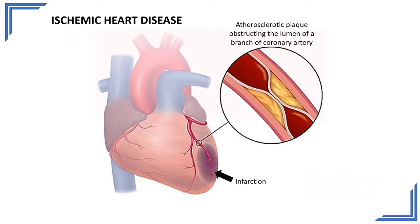The patient usually presents with a constricting kind of precordial chest pain that radiates to the medial side of the left arm. The pain can also radiate to the jaw as well as to the back in the interscapular area, and it is usually associated with sympathetic symptoms like profuse sweating and palpitation. That is ischemic heart disease and myocardial infarction.